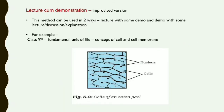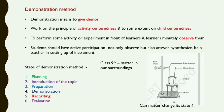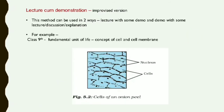Next is the lecture-cum-demonstration method, which is an improvised version. In the regular demonstration method, the teacher shows the activity and children observe. But in lecture-cum-demonstration, the teacher combines the demo with lecture and discussion to give students more clarity. For example, in Class 9 on 'A Fundamental Unit of Life,' the teacher can go to the lab for an onion peel cell activity while explaining what children need to observe.